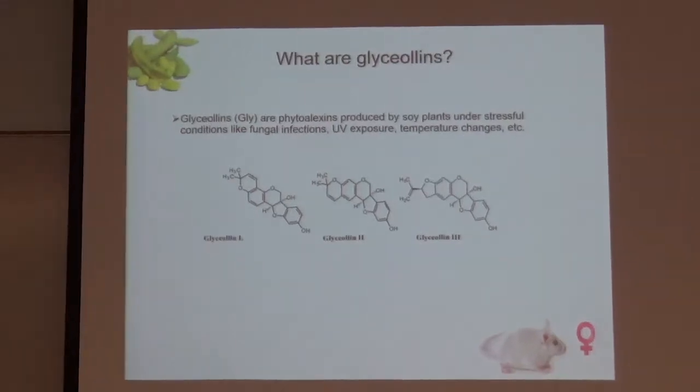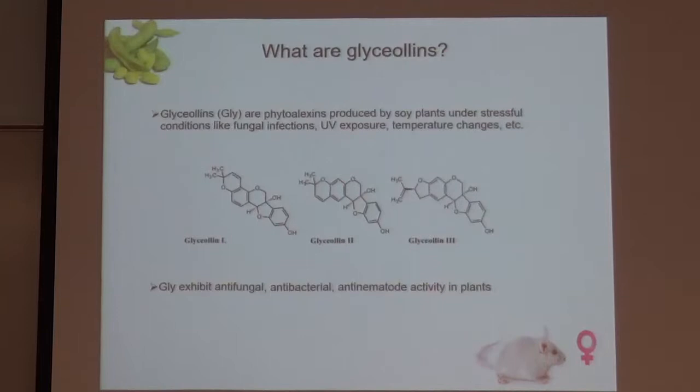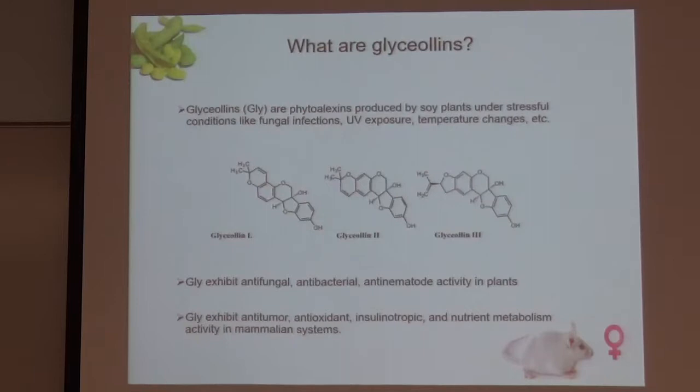Glyceolins are produced in response to UV or changes in temperature. In plants, glyceolins are known to have antifungal, antibacterial, and antinematode activity. But in mammalian systems — in us and animals in general — glyceolins exhibit antitumor activity, antioxidant activity, insulinotropic activity, and nutrient metabolism activity.